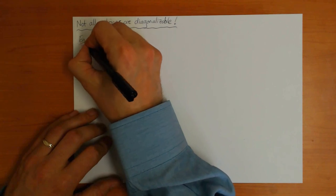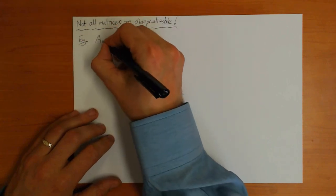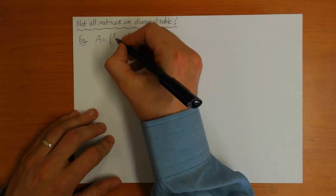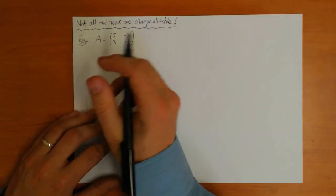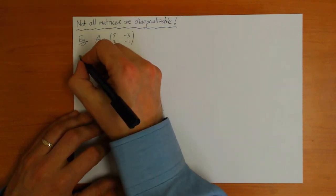Here's a simple example where it's not true. The matrix A, which is 5 minus 3, 3 minus 1. Let's try and calculate the eigenvalues and the eigenvectors of this matrix.